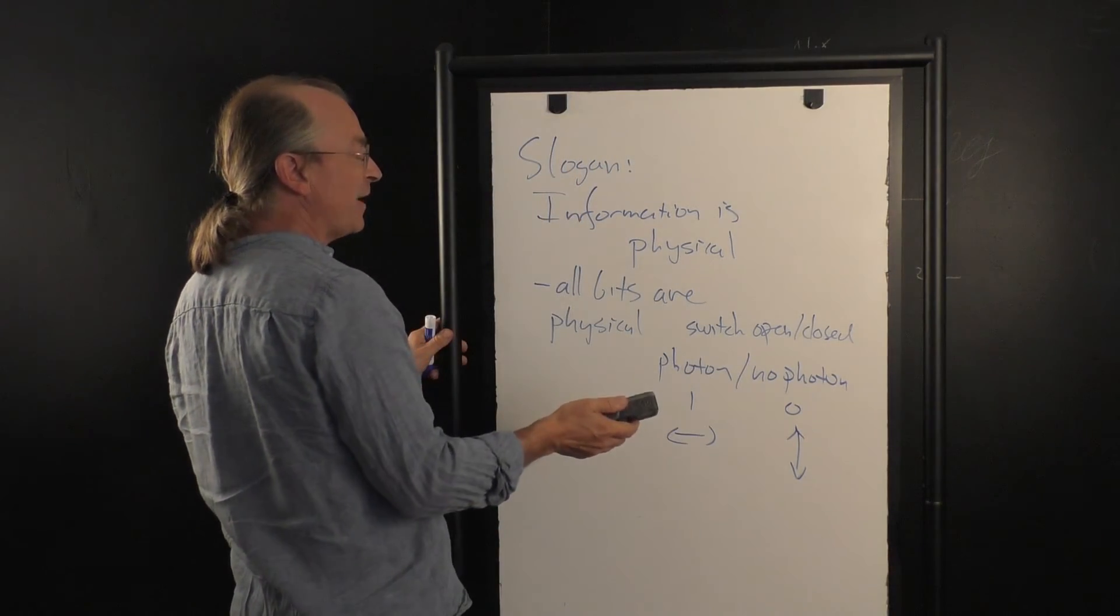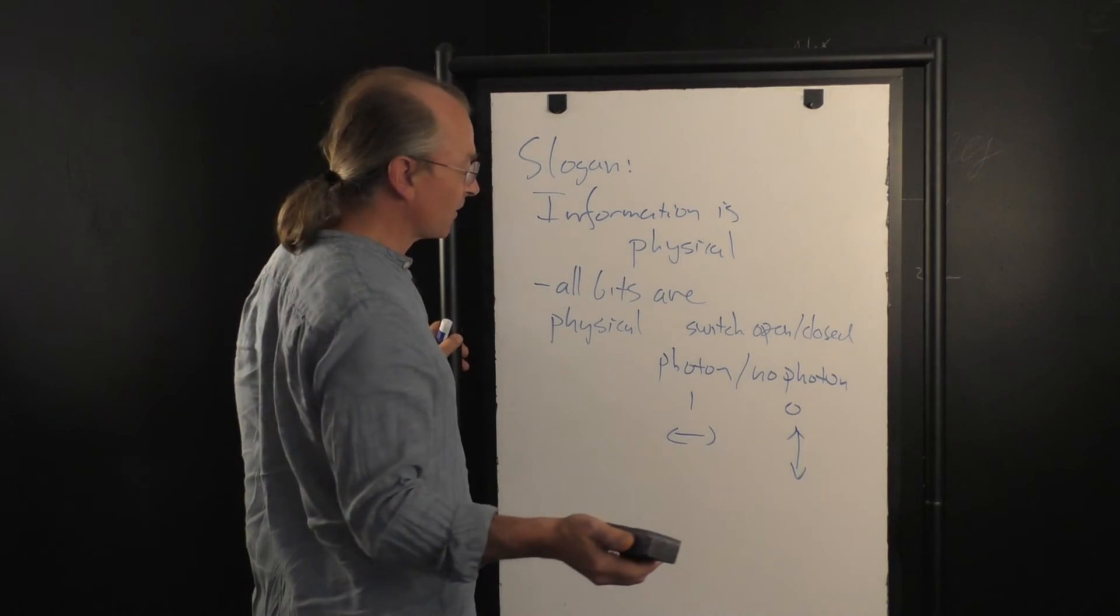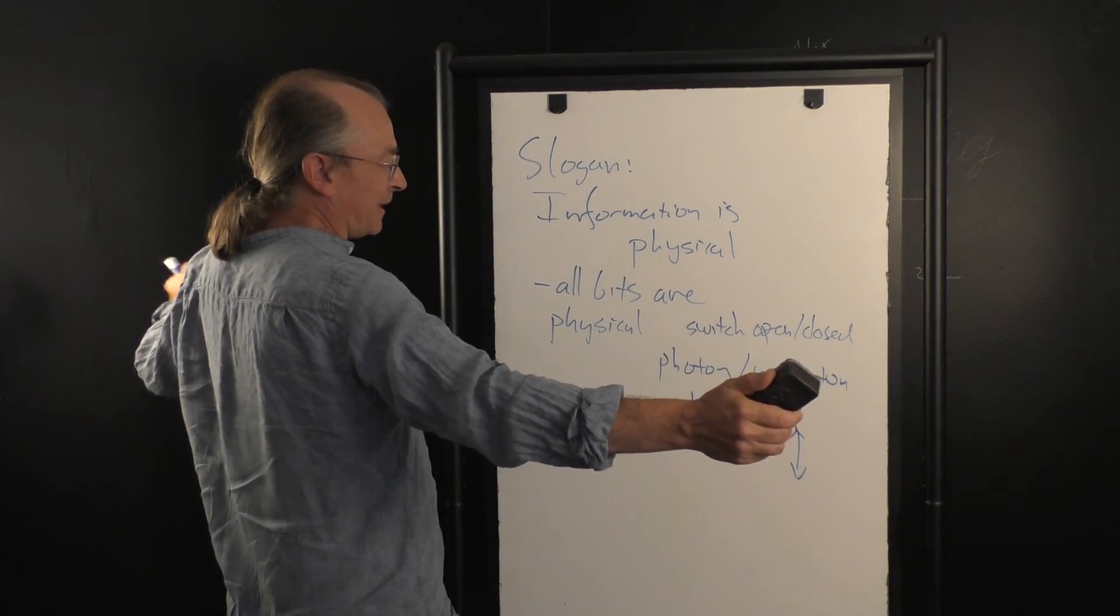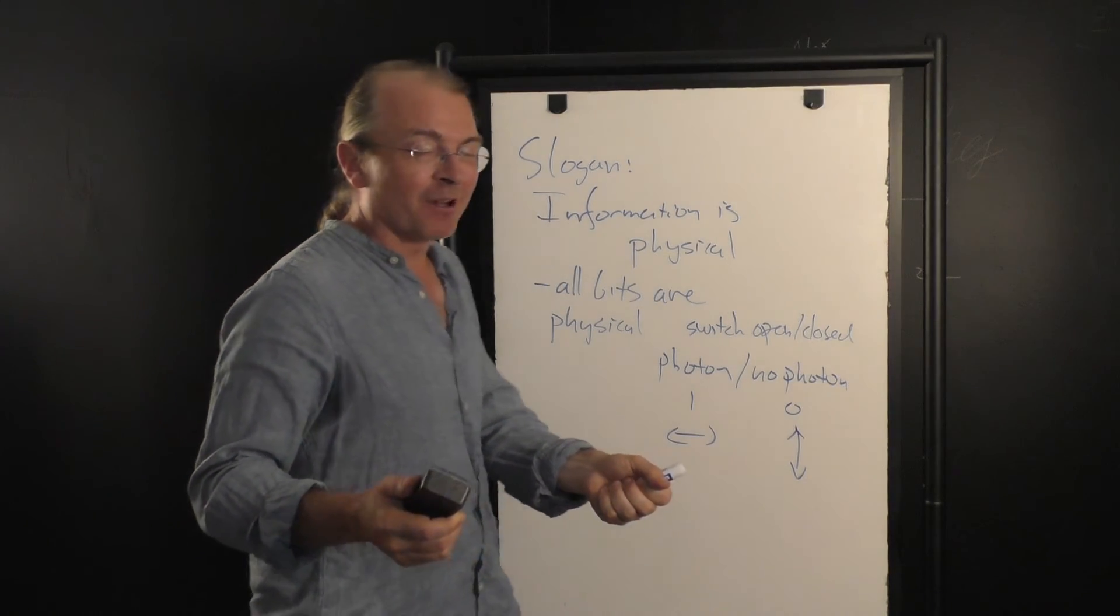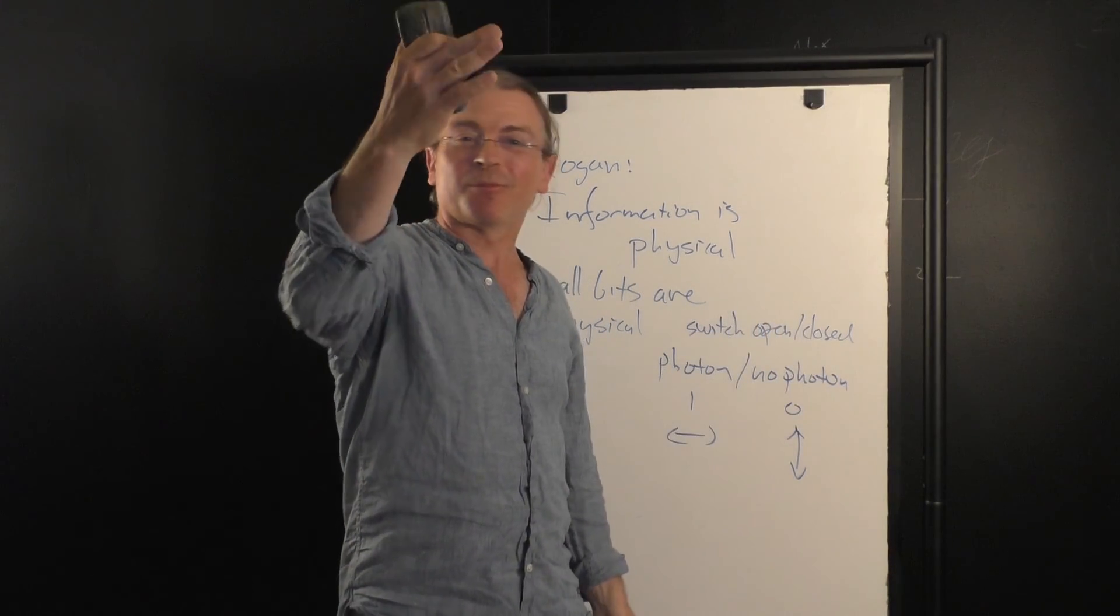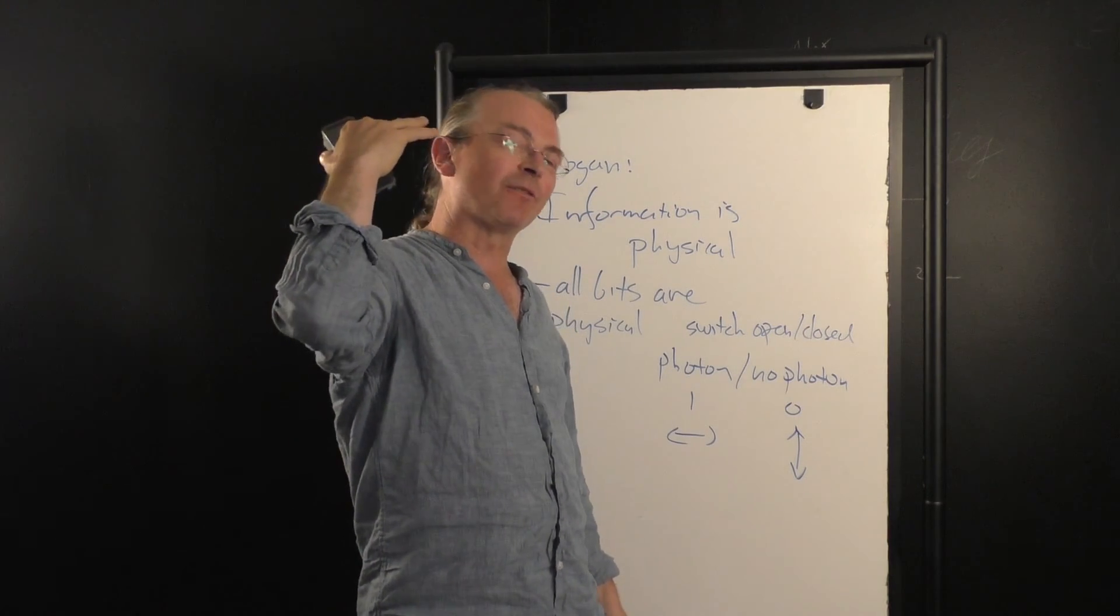Information is physical in the sense that all bits are physical. Any bit we're familiar with - a bit in our computer, a bit from seeing a particle of light, a flash of light - is actually some physical system that represents information to us.